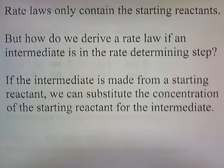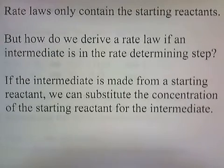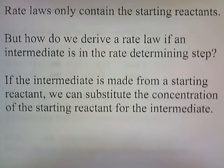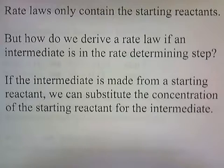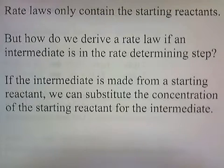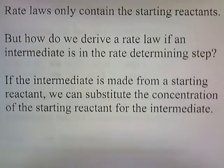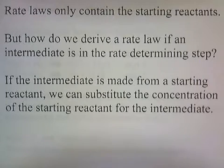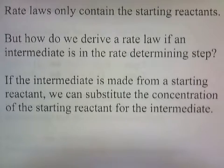Rate laws only contain the starting reactants. But how do we derive a rate law if an intermediate is in the rate determining step? If an intermediate is made from a starting reactant, we can substitute the concentration of the starting reactant in place of the intermediate.